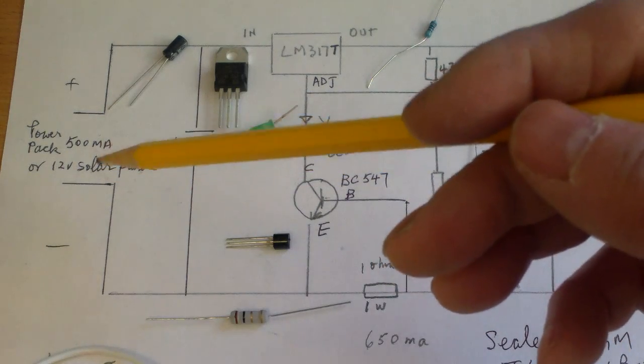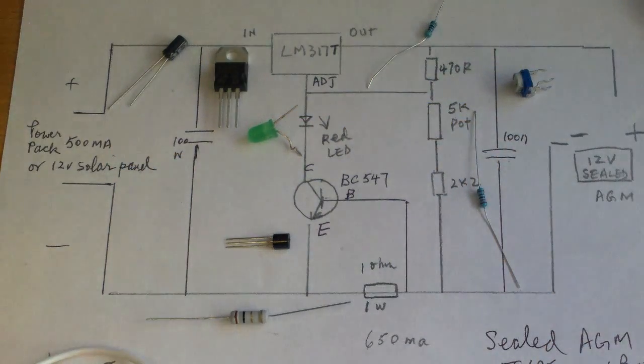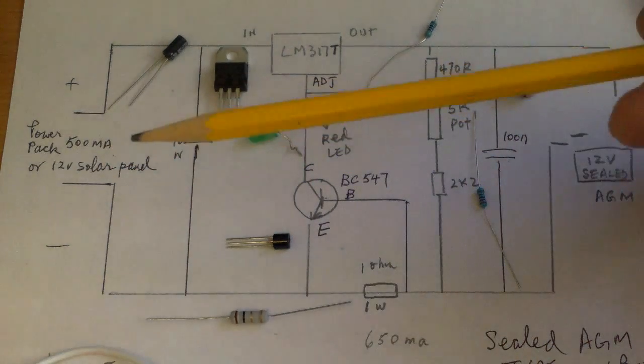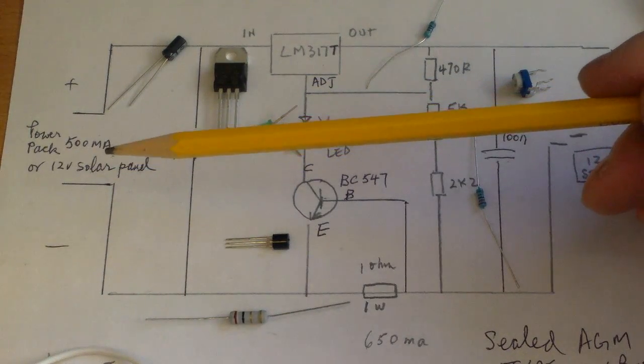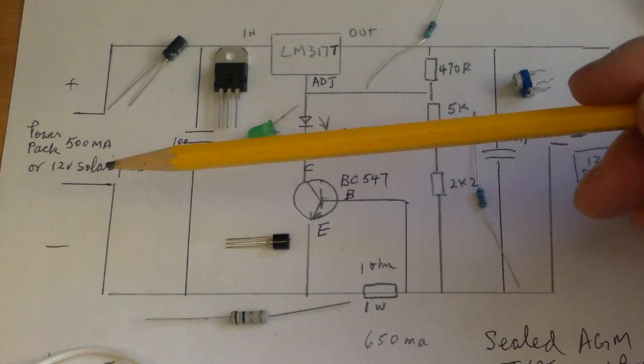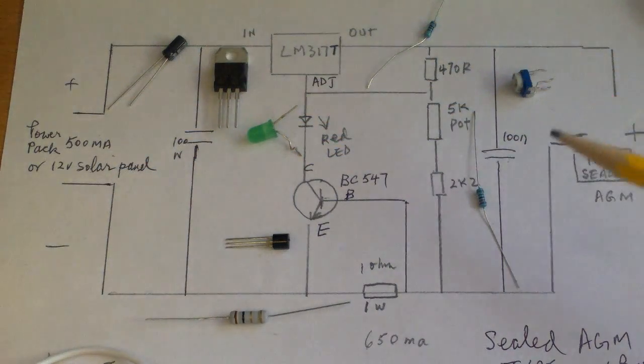If you have a 12 volt solar panel, usually the open voltage would be 18 to 21 open voltage. So since I'm interested in solar stuff, I'm going to try connecting maybe a 5 watt to 10 watt solar panel as the power source for this circuit.